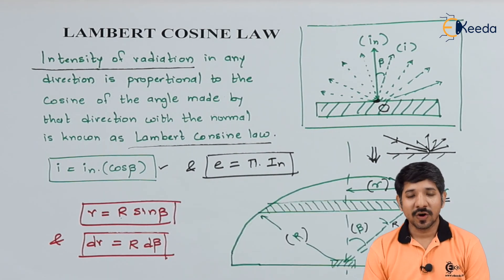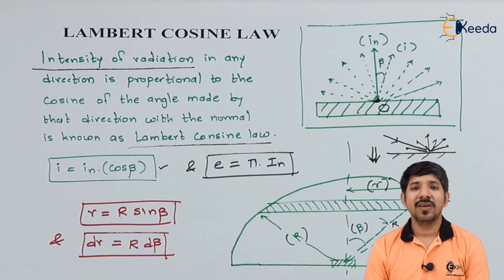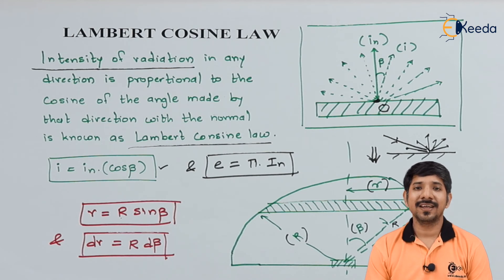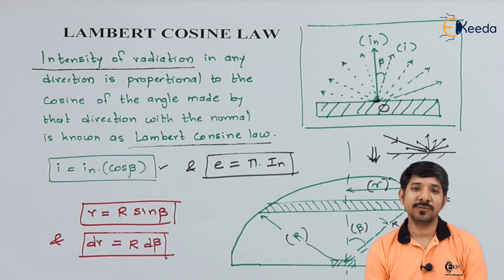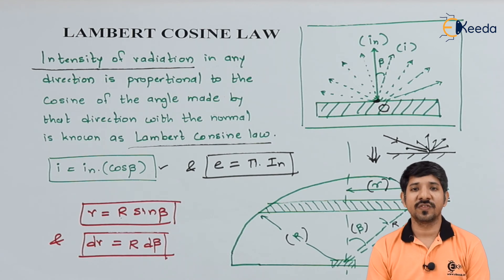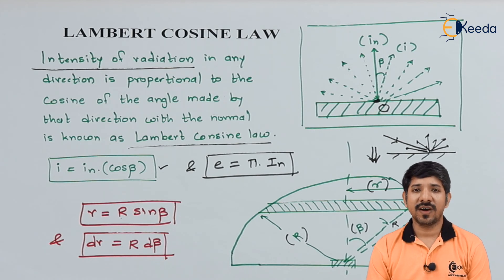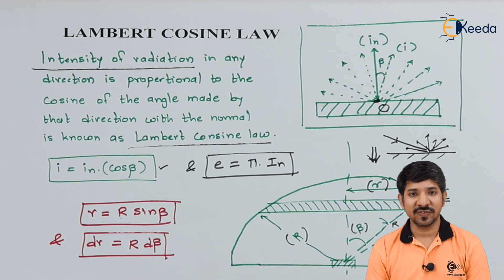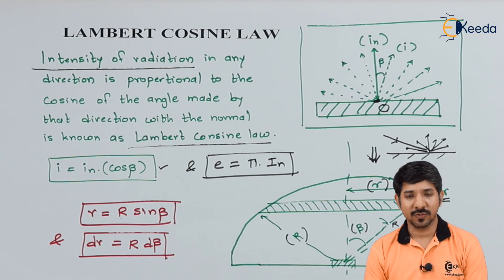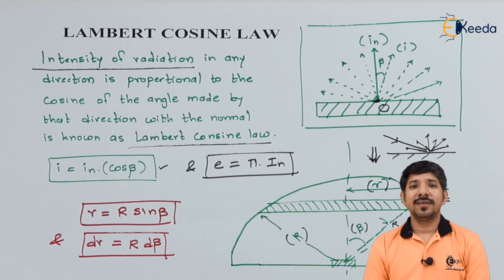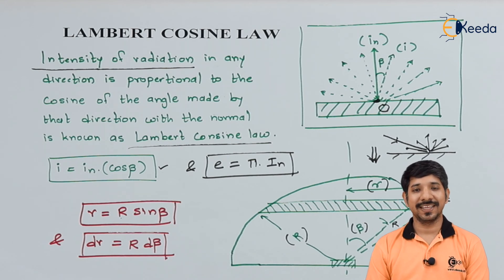In this topic, we talked about what Lambert's cosine rule is, and we also derived that the emissive power of a given body is nothing but π times the intensity of radiation. These two small derivations can be found with the help of the knowledge of solid angle, intensity of radiation, and Lambert's cosine rule. Thank you for watching this video. Please stay tuned with Ikeda and subscribe. Thank you.